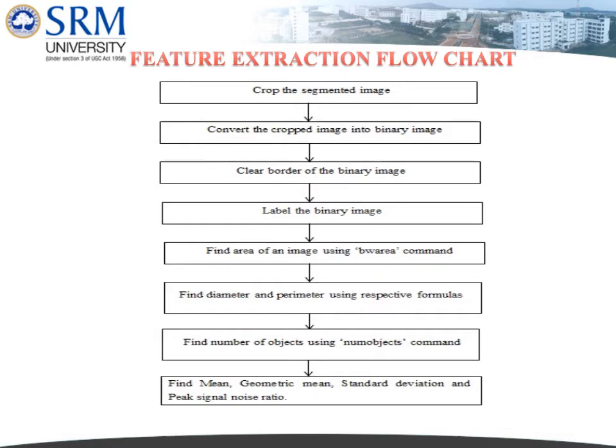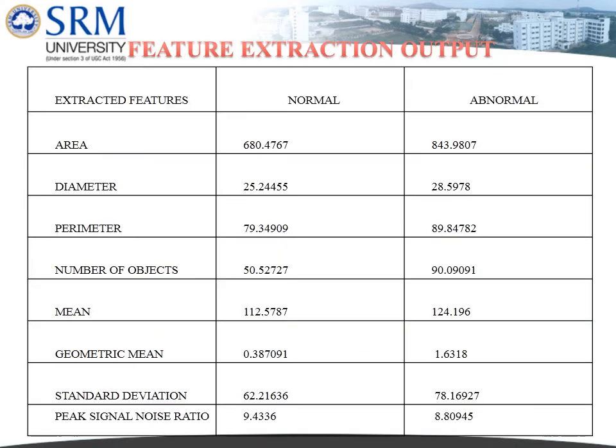The feature extraction flowchart explains the same procedure as described in the feature extraction algorithm. The output table of features extracted shows that area, diameter, perimeter, and number of objects exhibit better differences between normal and abnormal images. Similarly, mean, geometric mean, standard deviation, and peak signal-to-noise ratio are lower in normal images and higher in abnormal images. Number of objects shows a very large difference between normal and abnormal images.